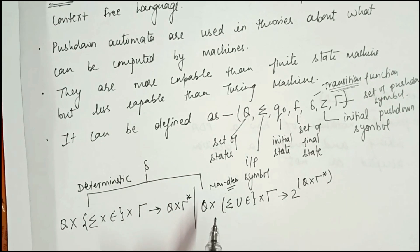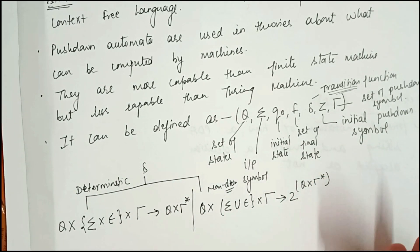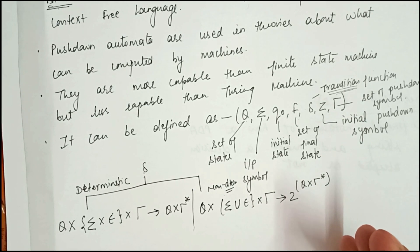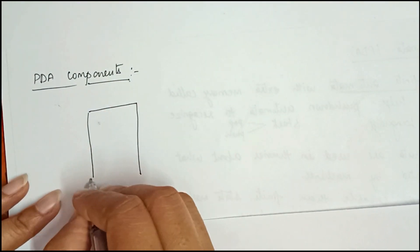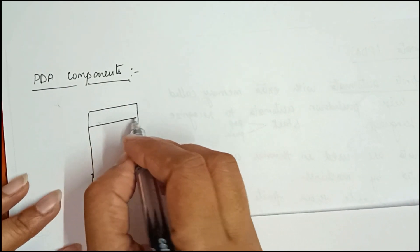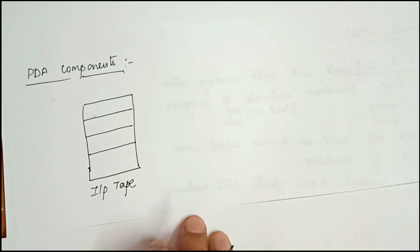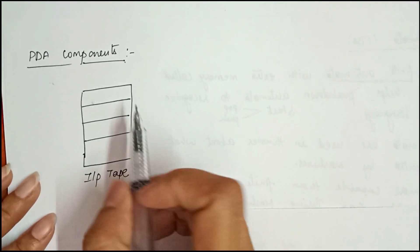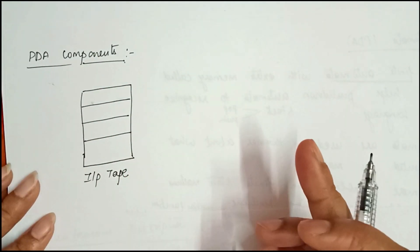Next, we explain how this PDA works by discussing its components. There are some components used in a PDA. The first component is the input tape. The input tape is divided into many cells or symbols. The input head is read-only and may only move from left to right.